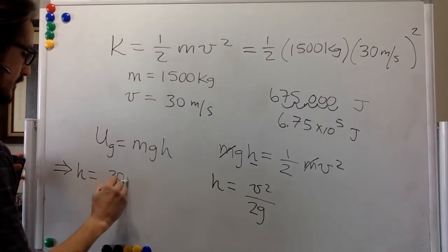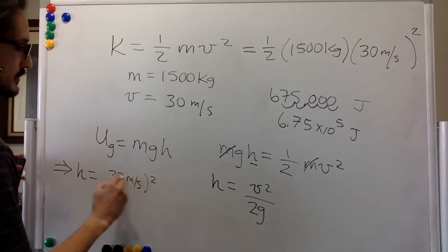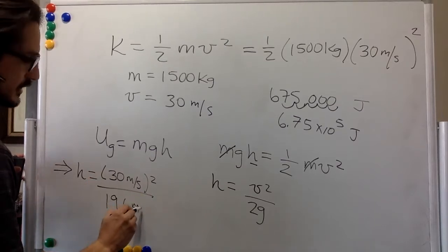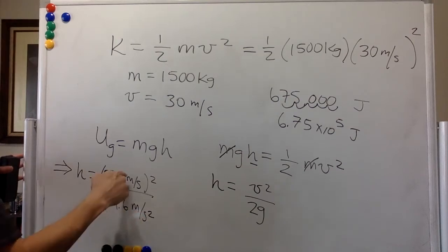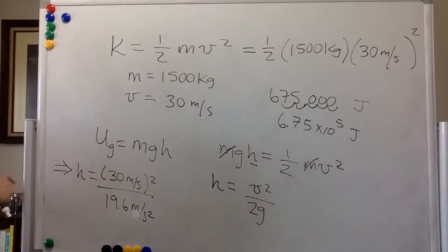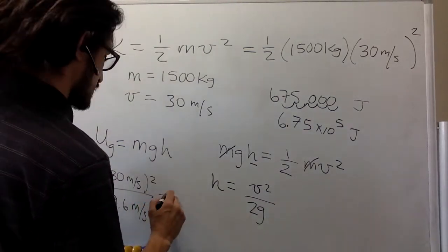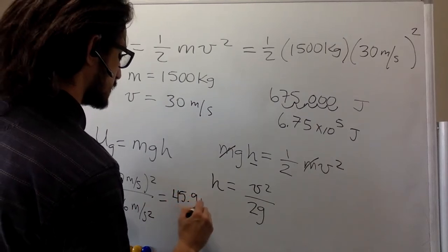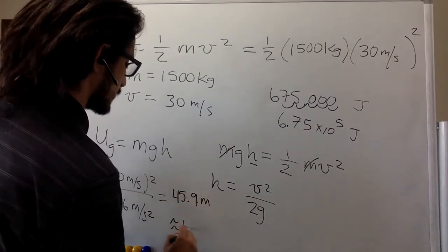h is going to be the 30 meters per second squared divided by 19.6 meters per second squared. And this is meter squared, second squared, meter, second squared. So we end up with meters. That one was the 900. We divide by 19.6. And so the height is 45.9 meters. And so about 46 meters.